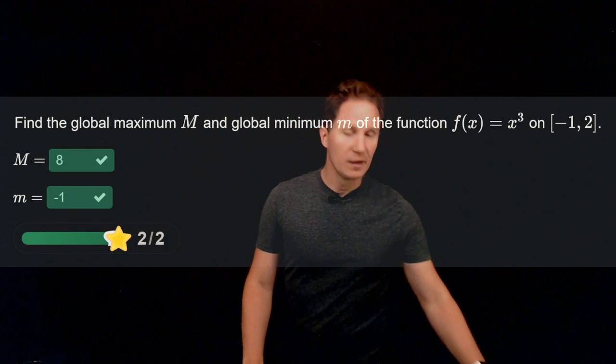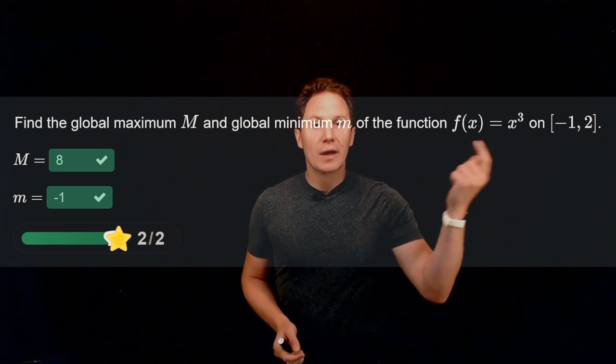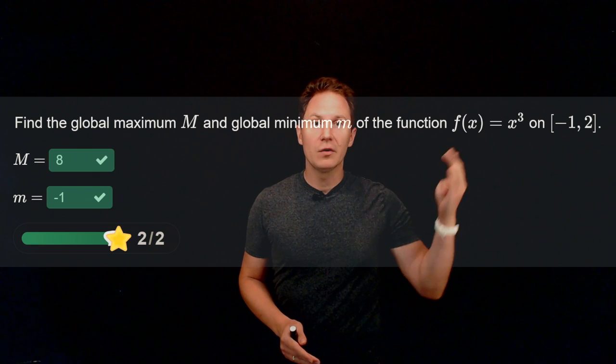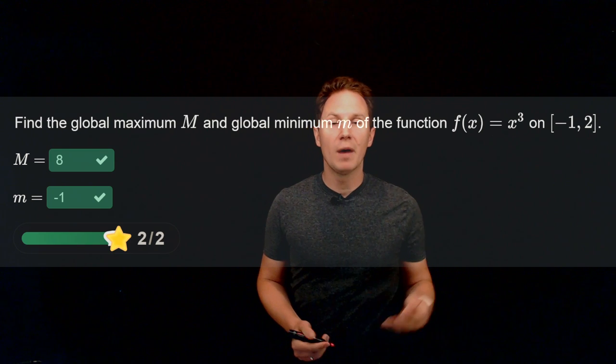Hope you paused it and have inputted for the global maximum 8 and for the global minimum negative 1. You can find those by considering x cubed and realizing this is a strictly increasing function.